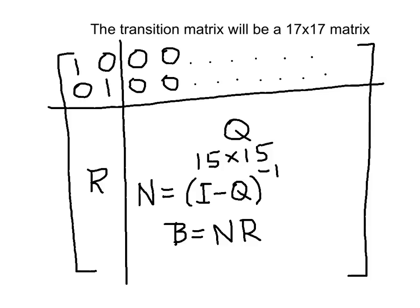Once we do those two matrix computations we can answer pretty much any question about this absorbing Markov chain, and the matrix tool does this computation rather nicely. Q is 15 by 15, meaning 225 entries, but 80 to 90 percent of them are zeros. The easy approach is to type a row of 15 zeros, copy and paste it 15 times to build a matrix full of zeros, then simply change the few entries that need to be non-zero.